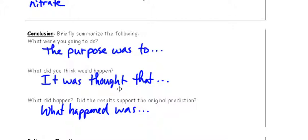What did you think would happen? Here's where you talk about your hypothesis. It was thought that, da-da-da-da-da. And then what did happen? Did the results support your prediction? So, here you say what happened was, et cetera, et cetera.